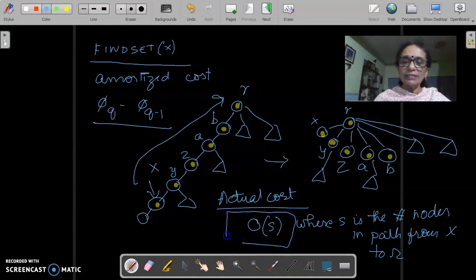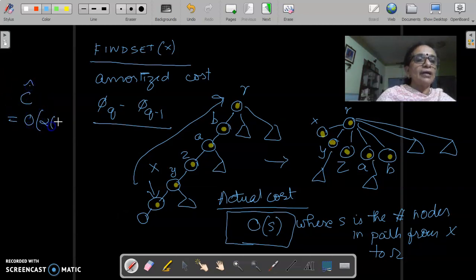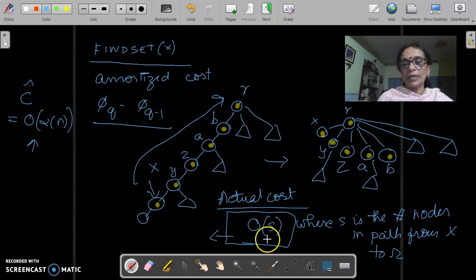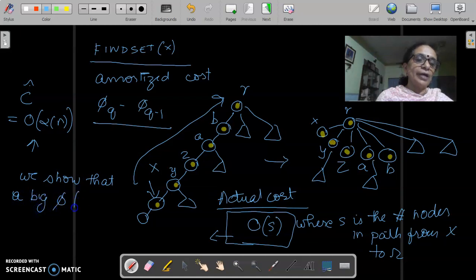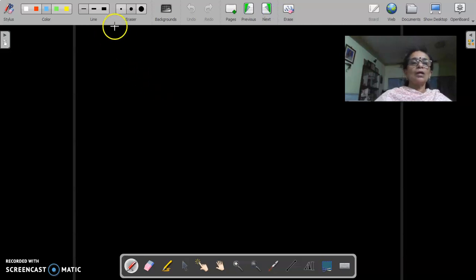So, our actual cost being O(s), it looks as if it is a very high cost. Because s could be arbitrarily large. Right. It could be as long as a possible tree could be. And a height could be in this case. So, it has to get compensated if we want to get good amortized costs. We will show that our amortized cost of a find set is going to be O(alpha n). Which means that if this actual cost has to end up with this amortized cost, we need to have a big fall in potential, which is of the order of s. So, we will show that such a fall in potential happens.